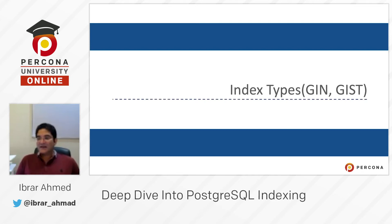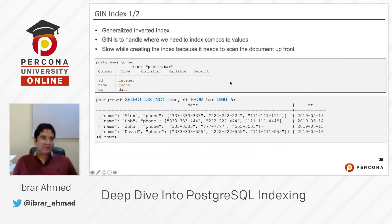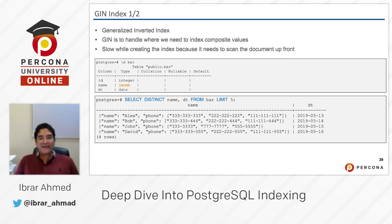Our next topic is GIN and GiST indexes. These are two other types of indexes PostgreSQL supports — some advanced indexes. GIN stands for Generalized Inverted Index. GIN is designed to handle cases where we need to index composite values.